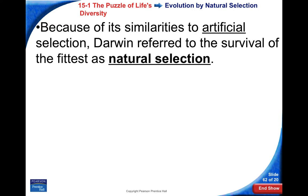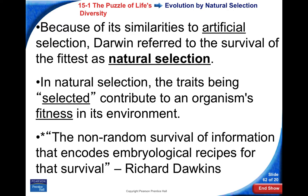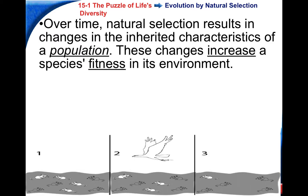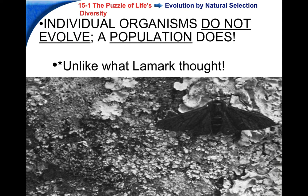Because of its similarities to artificial selection, Darwin termed his idea natural selection — where the traits being selected are selected by the environment, contributing to the organism's fitness. Over time, natural selection slowly causes changes in the inherited characteristics of a population, increasing the species' fitness as a whole, not just an individual. Natural selection cannot be seen directly — you as an individual are not evolving right now. It can only be seen over successive generations. Individual organisms do not evolve; the population as a whole does.